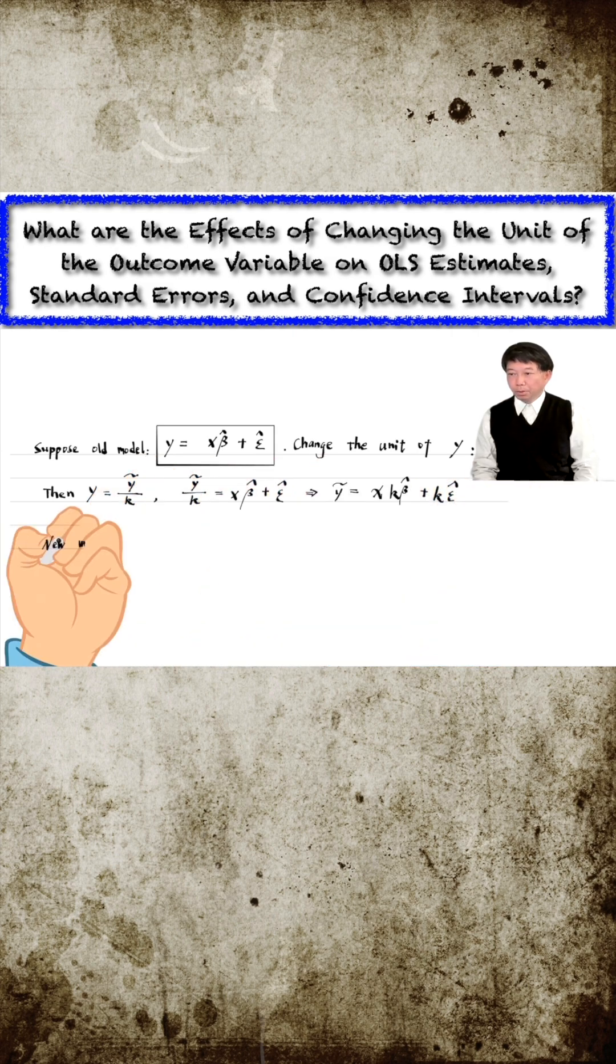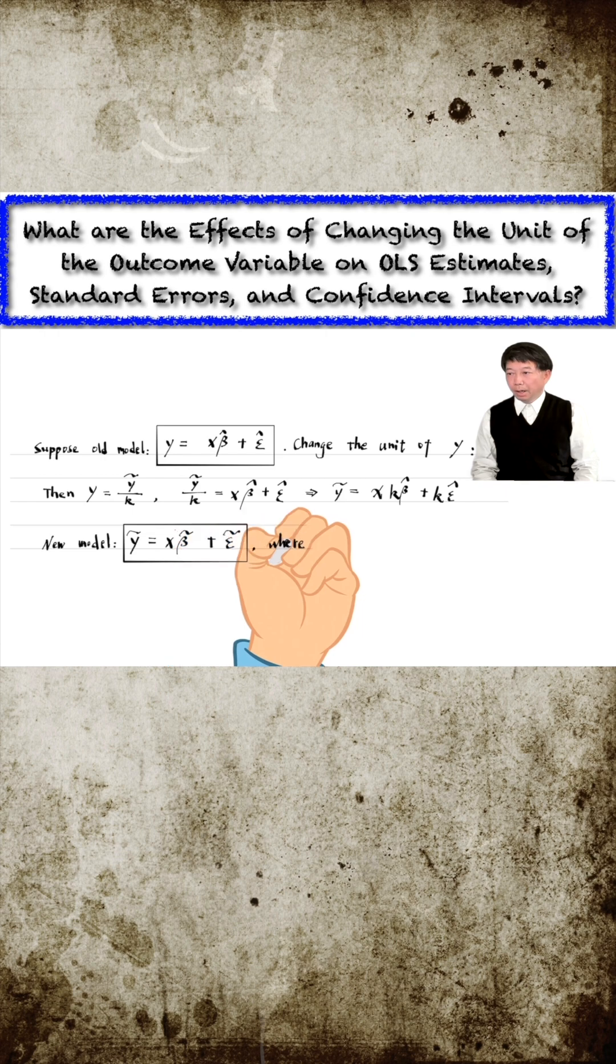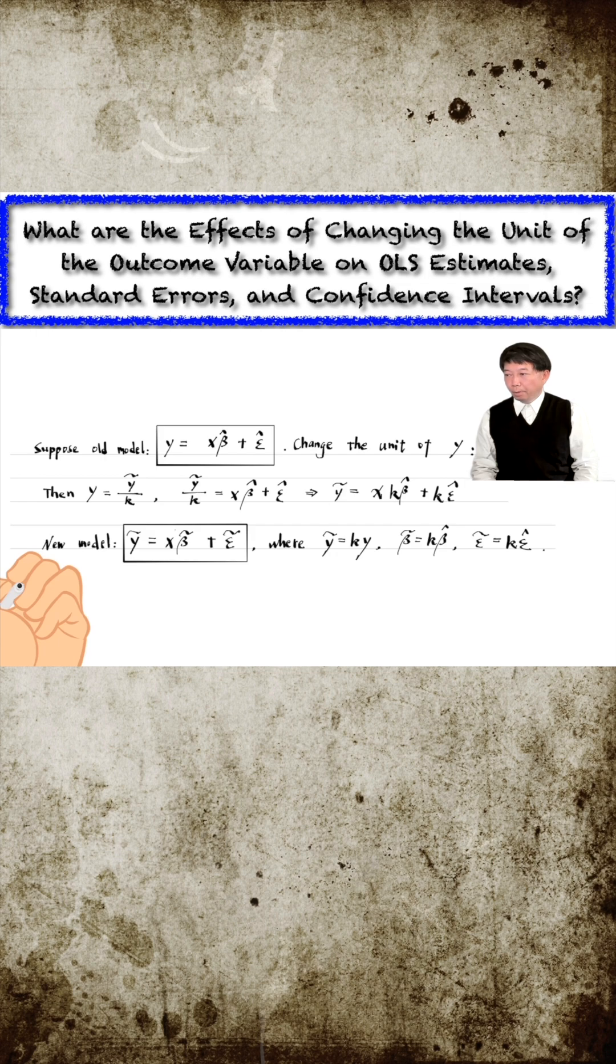The new model becomes y tilde equals x times beta tilde plus epsilon tilde. From the construction of the new model, we can immediately see that the new OLS estimator beta tilde equals k times beta hat.